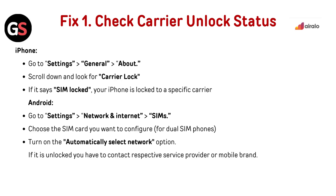For Android, go to Settings, then Network and Internet, then go to SIMs. Choose the SIM card you want to configure for dual SIM phones. Turn on the automatically select network option. If it is unlocked, you have to contact the respective service provider or mobile brand.